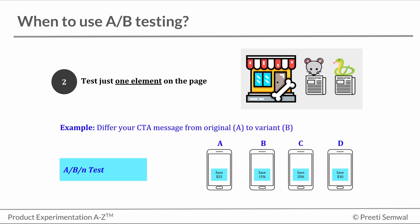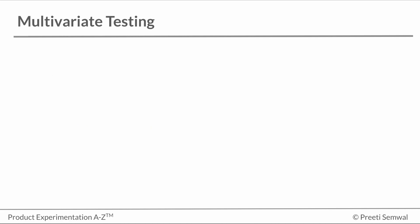This of course means that the traffic to the site must be split across these four variations with a lesser percentage of visitors for each variation. Let's move on to multivariate testing.